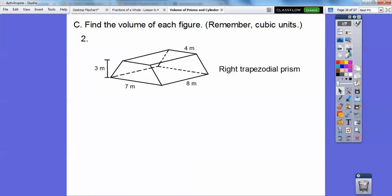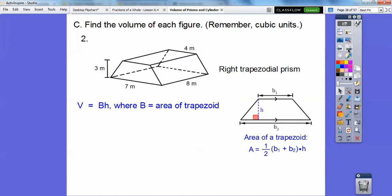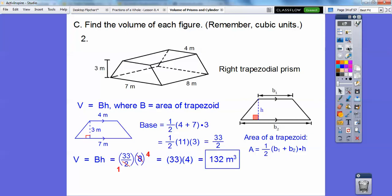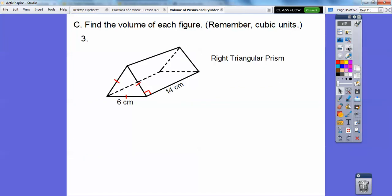So remember the volume of a trapezoid, or any prism, is base times height, where B, our base, is the area of a trapezoid. So remember the area of a trapezoid is one-half the sum of the parallel sides times the altitude. So let's apply that over here. So the parallel sides are this one and this one, so (4 + 7) times this 3, and then don't forget the half part. So we get 33/2 on that, so the volume is equal to base times height, and the height is this 8, so 33/2 times 8. Go ahead and cross out the 2 and the 8, and we get 132. Don't forget meters cubed.